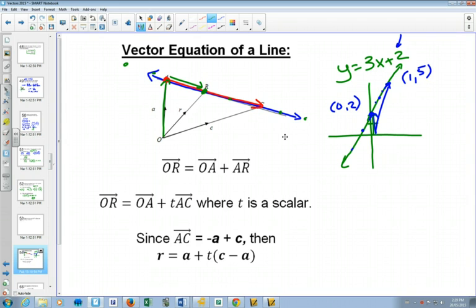So there's an explanation with diagrams. With the words that I have here, what I'm saying is OR, which is this vector right here, you could get there, like I said, by going from O to A and then A to R. That's the same as going from O to R.